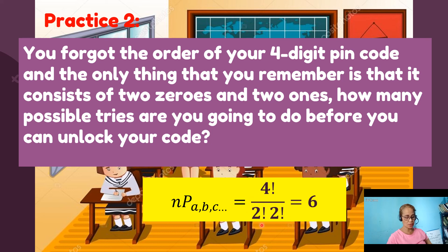And then the denominator will be 2 factorial, which represents 0, which appeared twice, and multiply to 2 factorial because 1 appeared twice as well. Then multiplying and canceling, you get the answer of 6. So you are only going to get 6 ways or 6 possible tries for you to unlock your code.